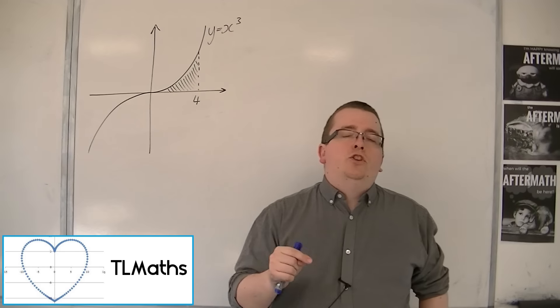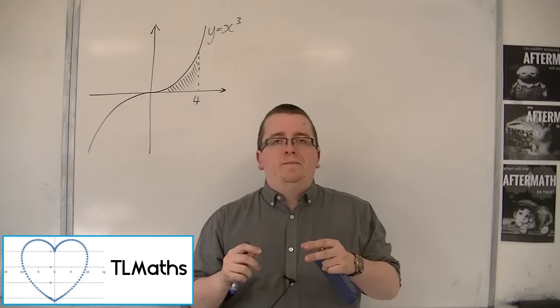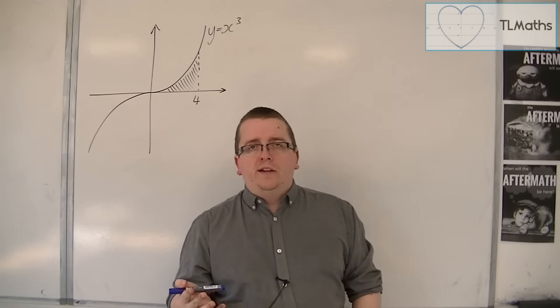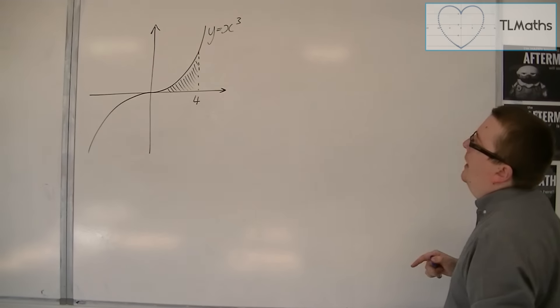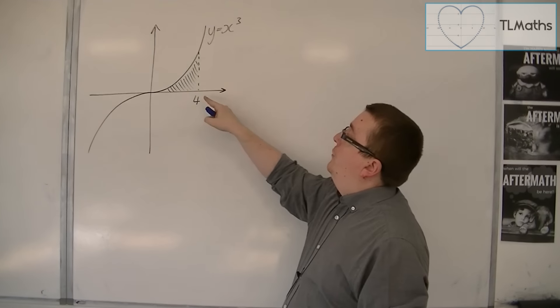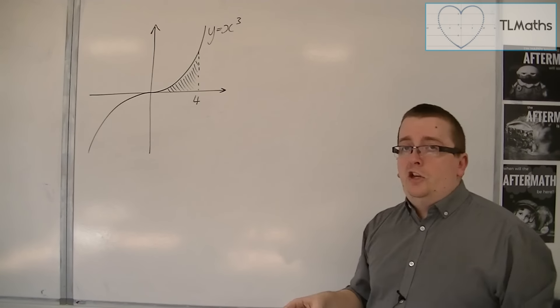So we've looked at how integration can find us the area between a line and the x-axis. We're now going to do it with a curve. So we're going to look at finding the exact area between 0 and 4 for y is equal to x cubed.